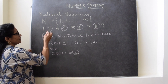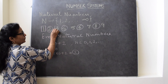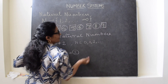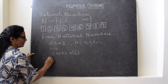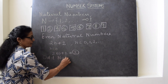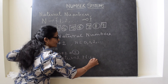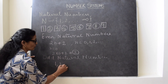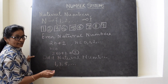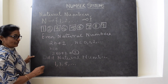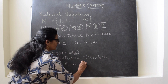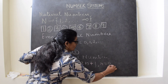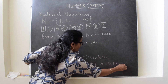The next category: 1, 3, 5, 7 and so on. These are called odd natural numbers. Odd natural numbers start with 1 and they also go up to infinity. So odd numbers are also infinite and their general form is 2N plus 1, where N is equal to 0, 1, 2 and so on.